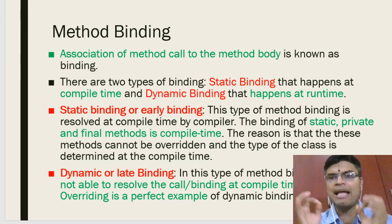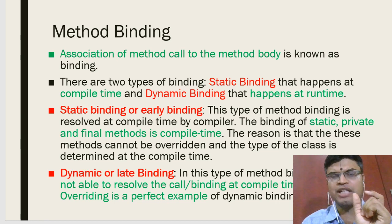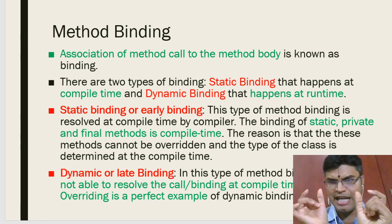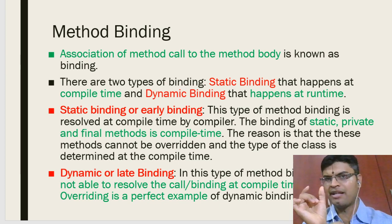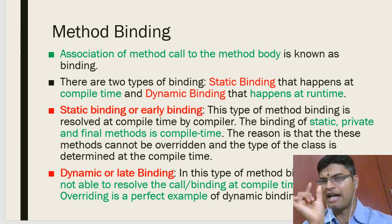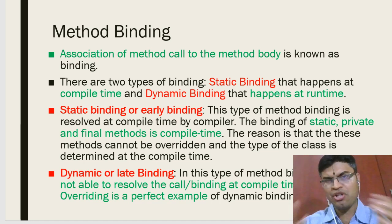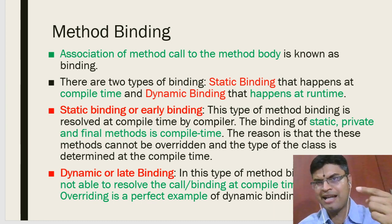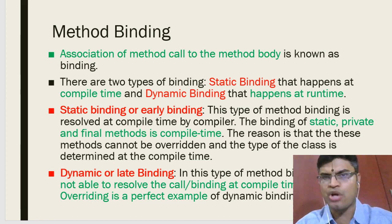Next we talk about method binding. Method binding means whenever you call a function using an object — object name dot method name — that method call will have the address of the function body binded to it. You are basically binding the address of the function body with the call being made to that function. This is called method binding.